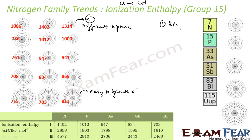So the factors that decide ionization enthalpy are: first, size — and second, stability. If by removing one electron the atom becomes more stable, then the electron has a reason to leave. These two factors — the desire of the electron to leave and the control of the nucleus — decide how easy it is to pluck an electron. Going down the group, size increases, so it becomes easier to pluck an electron.